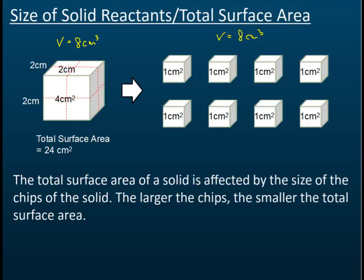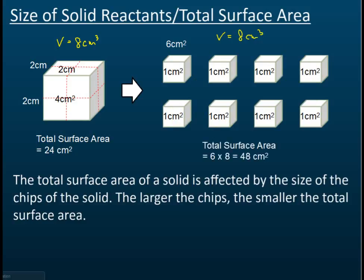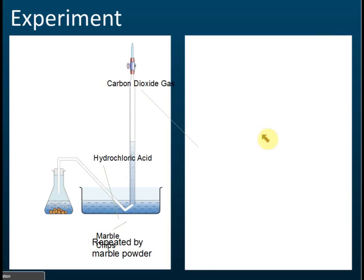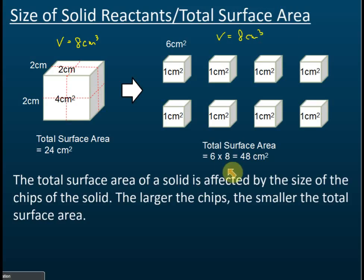We have eight small cubes, so the total surface area is 6 multiplied by 8, which equals 48 cm².